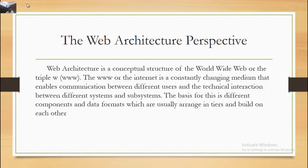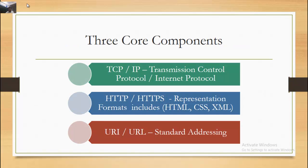The basis for this is different components and data formats, which are usually arranged in tiers and built on each other. Overall they form the infrastructure of the Internet, made possible by three core components: TCP/IP (Transmission Control Protocol/Internet Protocol), HTTP/HTTPS, and Representation Formats including HTML, CSS, and XML, plus URI as the standard for addressing.